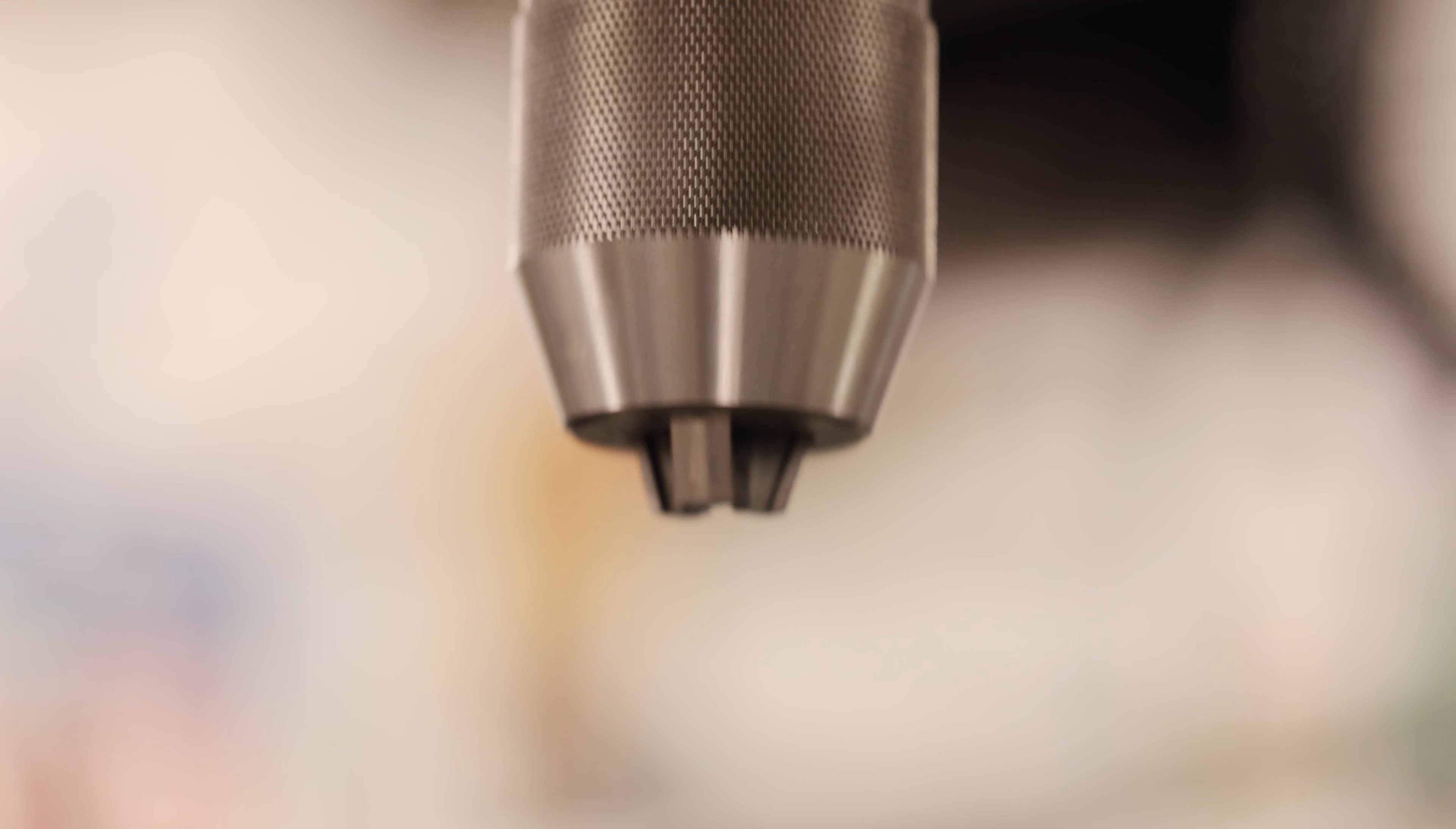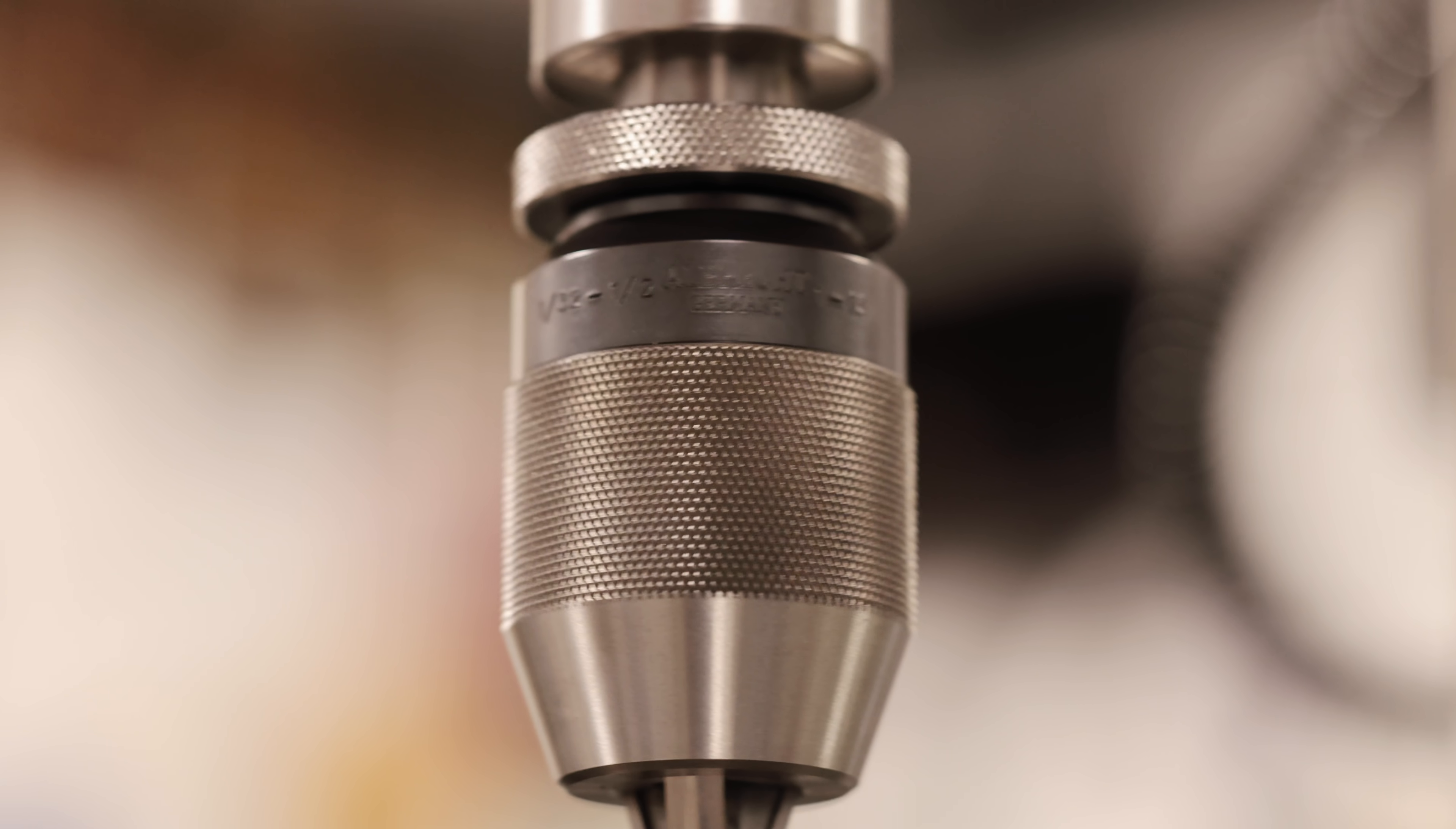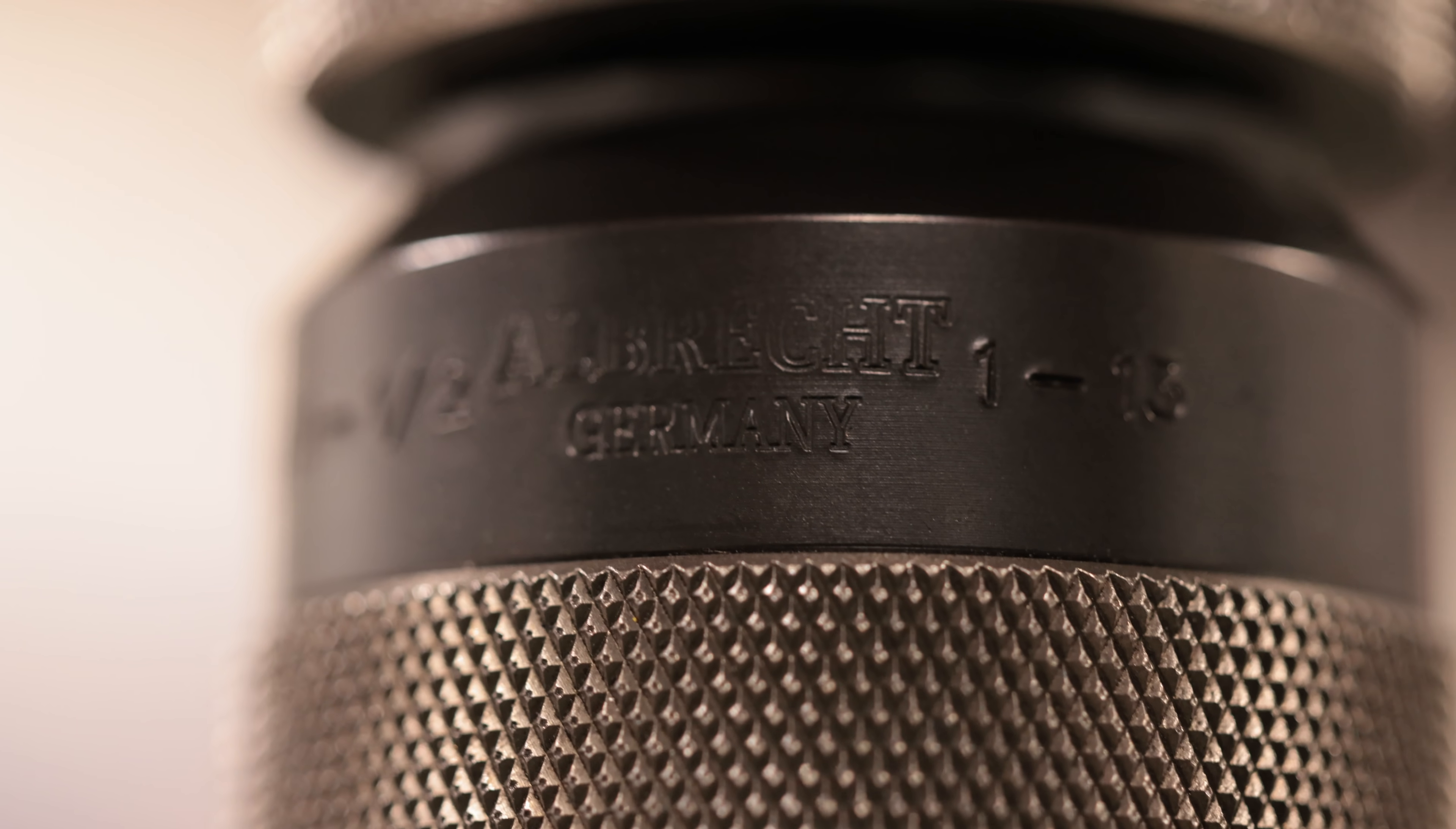The drill chucks we use are the Albrecht Classic Plus Keyless with a 3 Morse Taper Integral Shank. The one currently installed is the 1/32nd to 1/2 inch. It's a very nice, precise, accurate chuck that's made in Germany.